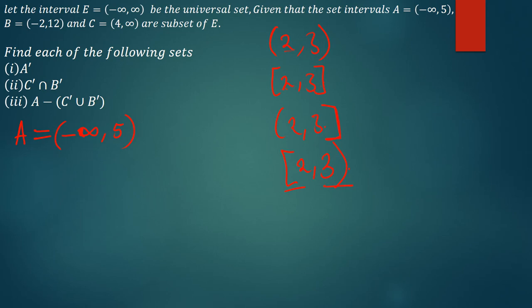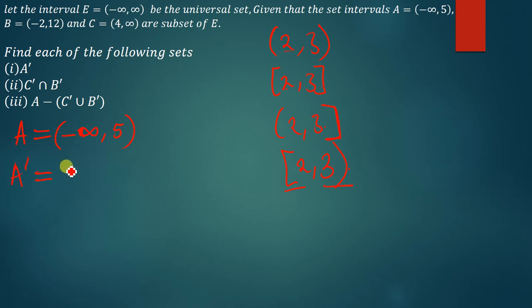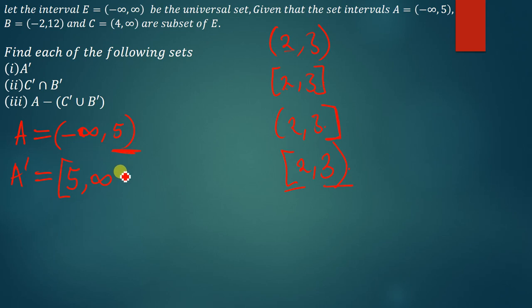So, A complement: if numbers from negative infinity up to 5 are in set A, then the numbers starting from 5 going to positive infinity are in the complement of A. Since 5 is not part of A because of the open bracket, 5 is part of the complement. So we put a square bracket at 5. On infinity — whether negative or positive — the symbol is always an open bracket.